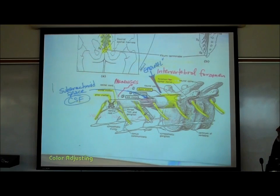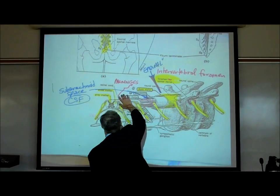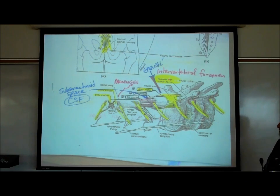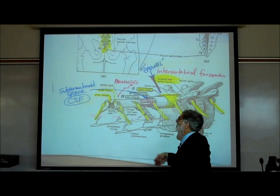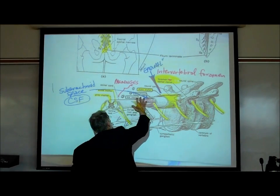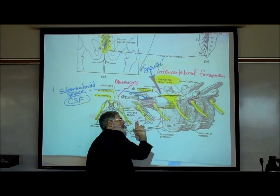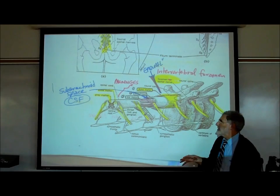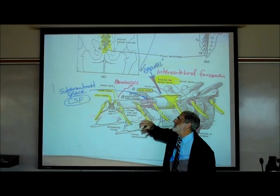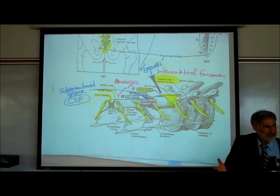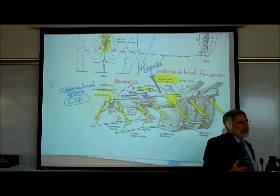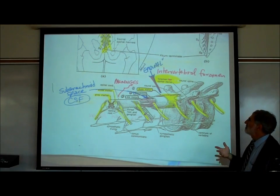There are three membranes, or meninges, wrapped around the spinal cord and also wrapped around the brain — around the central nervous system — to protect it. You've heard the term meninges because you've heard the term meningitis. The innermost one is called the pia mater, which literally means soft mother, and it adheres right to the surface of the spinal cord and brain. The middle membrane is called the arachnoid membrane, which means like a spider web. The outermost meninges is called the dura mater, literally meaning the tough mother — dura, like durable or tough.